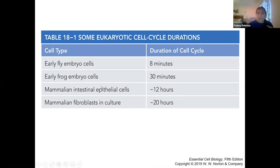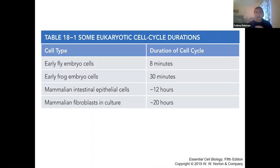Early fly and frog embryo cells can replicate and divide within 30 minutes. Comparing that to prokaryotic cell cycle — prokaryotes like general bacteria can duplicate within 20 minutes, going super fast all the time. This is why an infection from bacteria can be so lethal and spread so fast, because they have a much faster cell cycle duration than general eukaryotic cells.